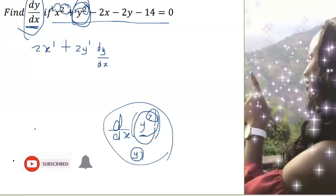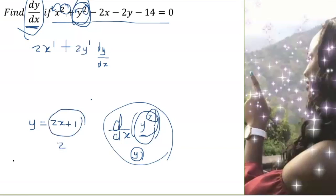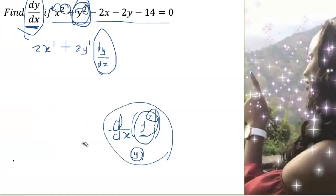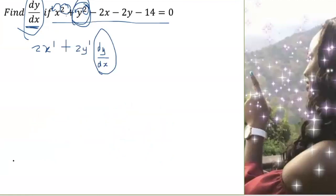Differentiating y gives dy/dx. Why do we get dy/dx? Because y represents a function of x. So the dy/dx means that if y were 2x plus 1, I would differentiate 2x plus 1 to get 2, and instead of dy/dx I would have the number 2. So applying chain rule to y squared: carry the 2 in front, subtract 1 from the power, then differentiate the inside y to get dy/dx.